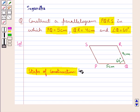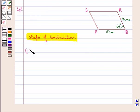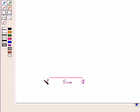We will follow some steps of construction. In the first step we draw a straight line PQ equal to 5 cm. This is the straight line PQ of measure 5 cm.